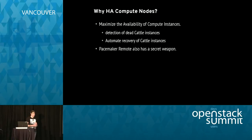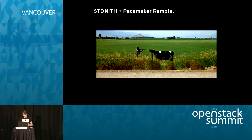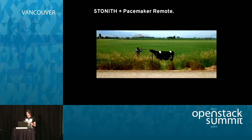Sometimes compute instances go really bad — something catastrophic happens, they're unresponsive, failing in a way that can't be recovered. We need a way to isolate that compute instance from the rest of the herd. We don't want a bad compute node running virtual machines anymore. For this we have a secret weapon: Stonith. Pacemaker and Pacemaker Remote can both do fencing — we can fence Pacemaker Remote nodes exactly the same way we fence Pacemaker nodes. If a compute node is just going crazy, we cut it off and trigger evacuation of those VM instances to a healthy compute node.